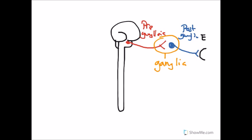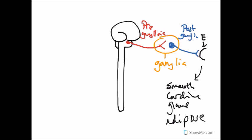The effector cell could be a smooth muscle cell, a cardiac muscle cell, a gland cell, or an adipose cell. Think of it like a relay race: runner number one is our pre-ganglionic neuron, and he's going to release a neurotransmitter, like a baton, to runner number two — the post-ganglionic neuron — who will release a neurotransmitter at the finish line, the effector cells: smooth muscle, cardiac muscle, gland, or adipose.